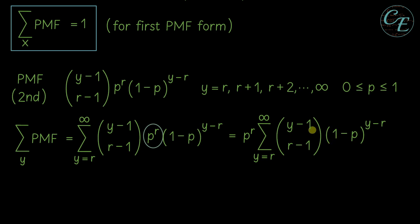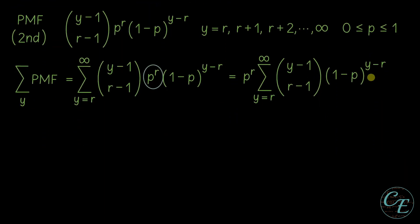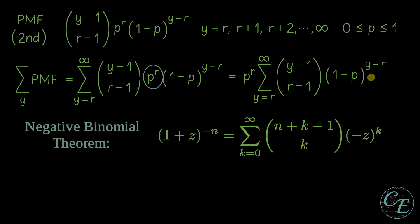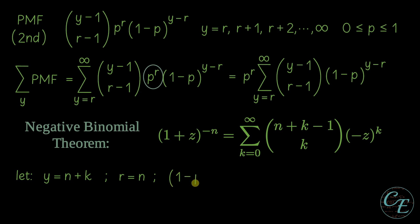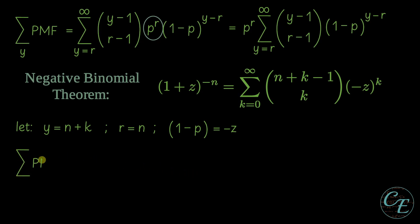Then to simplify this, we will use the negative binomial theorem again. Let's go to that theorem. Let us copy it. But we will now replace this by this. Then to use this binomial theorem, we need to make this expression similar to this expression by doing transformations. So let's do the transformation. Let Y equal to N plus K for the random variable Y. We have R equals to N, same as before. Then same as before, 1 minus P equals negative Z. Let's substitute this now. We have P raised to R in here, which we will transform later.